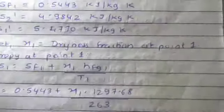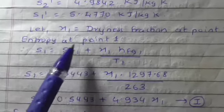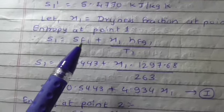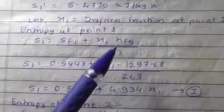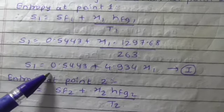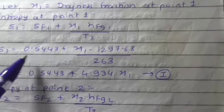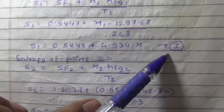The problem will be started with entropy at point 1. The formula will be: S1 equals SF1 plus X1 times HFG1 divided by T1. Here X1 is unknown. When we formulate the equation, S1 equals 0.5443 plus 4.934 X1. We are calling this equation number 1.